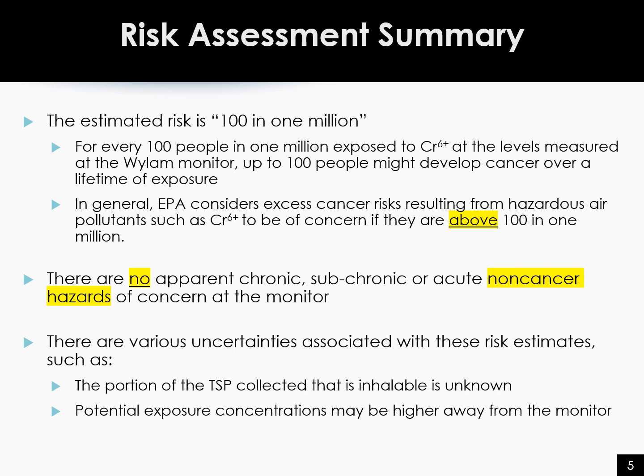Using the Wilhelm air monitoring data, we estimated that the cancer risk is at the 100-in-1-million level. Most of that risk was due to the hexavalent chromium measured in the air. We did not find the potential for other non-cancer health problems due to the measured levels of metals, including chromium, in the air. The good news is that the estimated cancer risk we calculated using the Wilhelm monitoring data is not higher than 100 in 1 million. However, because the chromium levels in the air in Wilhelm are somewhat elevated, it is something that we want to keep an eye on.